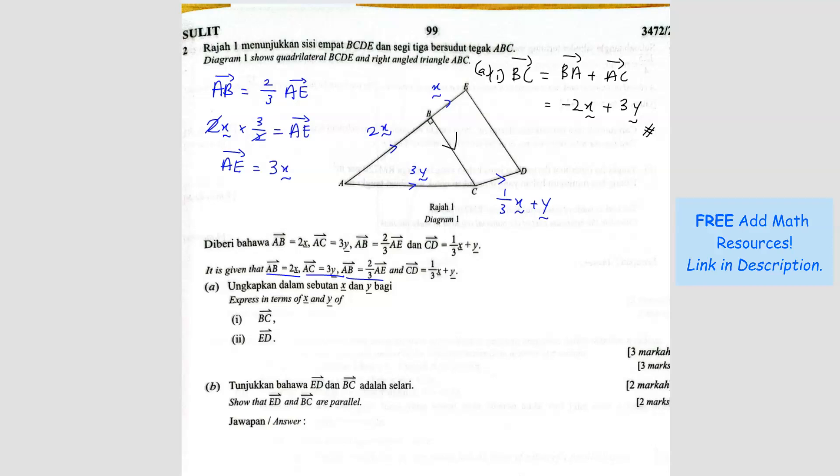Question A2. A2 is asking for ED. So ED is here. So what we can do is we can go E to A first, come here, then go to AC and CD. So plus AC plus CD. The equation will be negative 3X plus 3Y, and then CD is plus 1 over 3X plus Y.